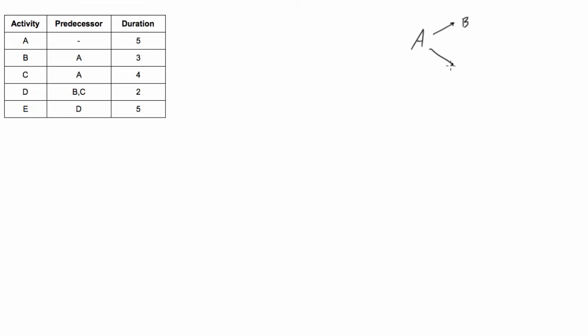So we would have activity B and activity C, and then we would have activity D can start once B and C are both done. So it's going to come back down into activity D, and then activity E can happen once activity D is done.